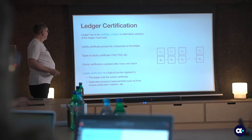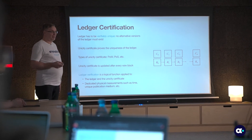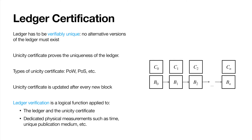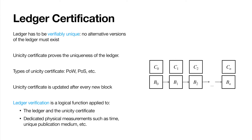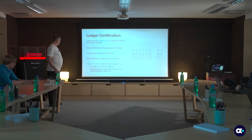The ledger should be verifiably unique. What happened in the system should be observable from the ledger, and there should not be two different versions of the ledger. For example, for an accountant, there should not be one ledger shown to investors and another shown to the tax office. There should be a unique ledger, and this uniqueness should be verifiable from the ledger itself, independent of how the ledger was created, on which machine, by whom, etc. The ledger should speak about itself and also its uniqueness.